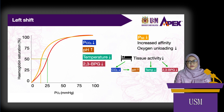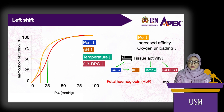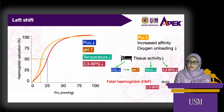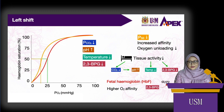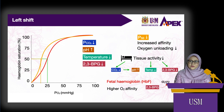Another factor that can shift the curve to the left is fetal hemoglobin. As learned earlier, fetal hemoglobin has gamma chains instead of beta chains. 2,3-BPG binds to the beta chains and does not bind as well to the gamma chains, so less 2,3-BPG is bound and affinity for oxygen increases. Because arterial PO2 in the fetus is low — about 40 mmHg — this increased affinity is beneficial to the fetus.